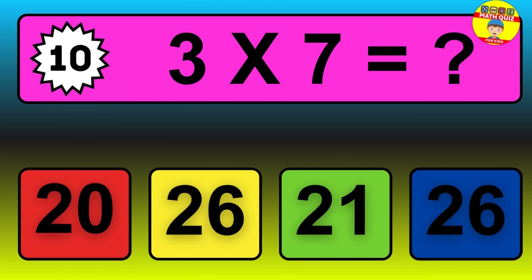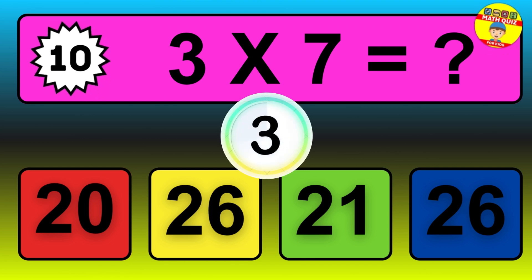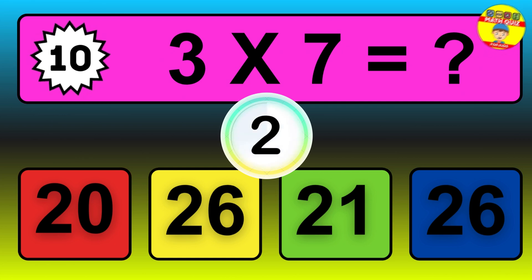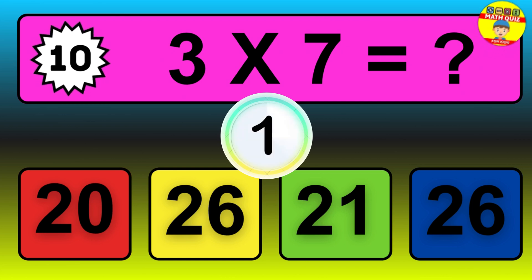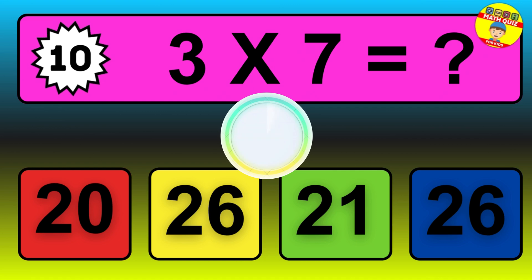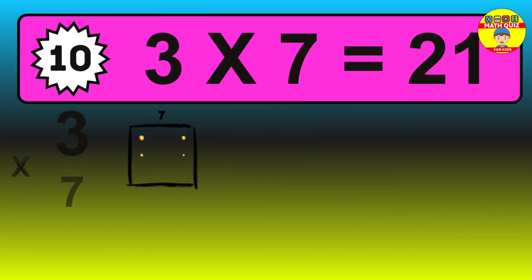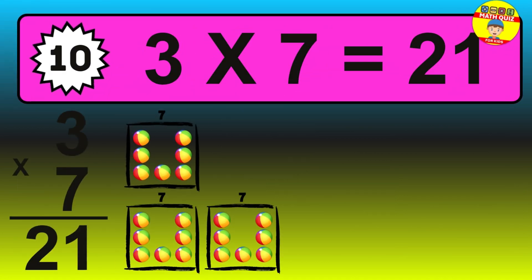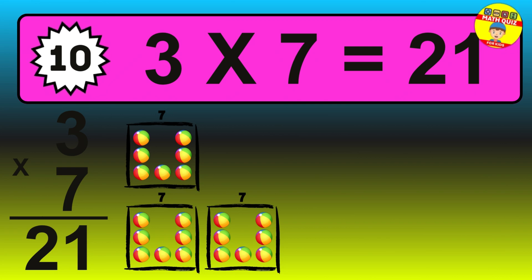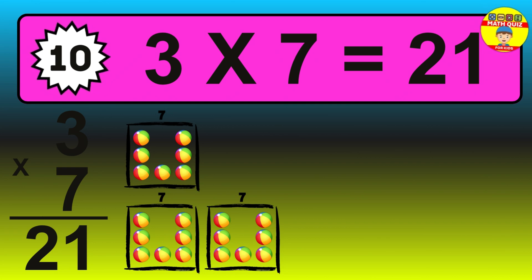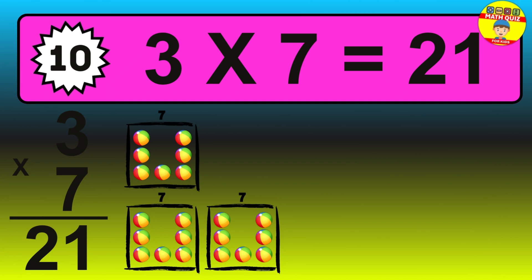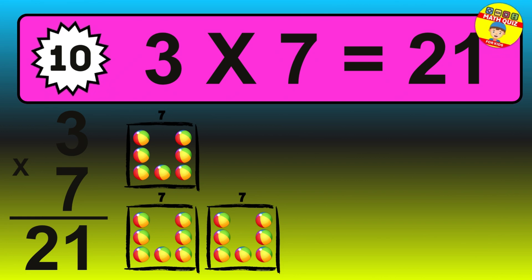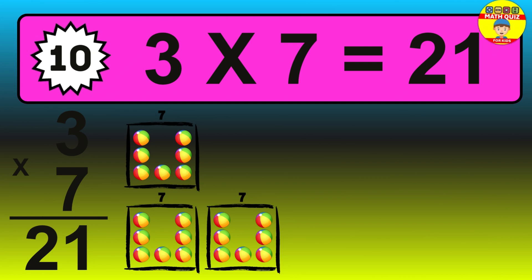Question 10. 3 times 7 equals what? The answer is 3 times 7 is 21. To calculate, we have 3 groups with 7 balls each one. So, how many balls do we have? 21 balls.